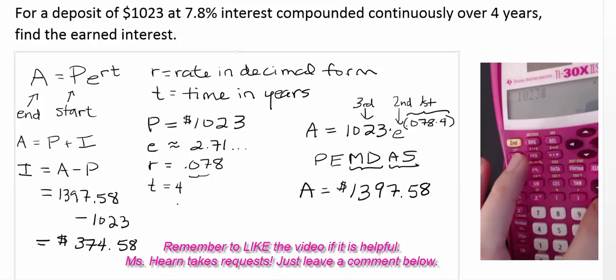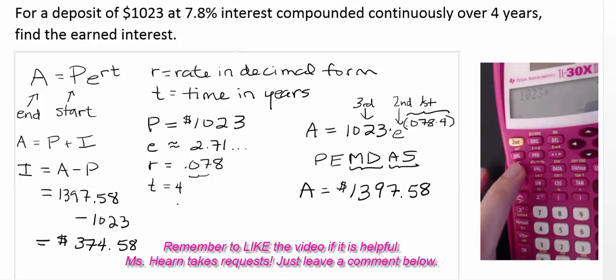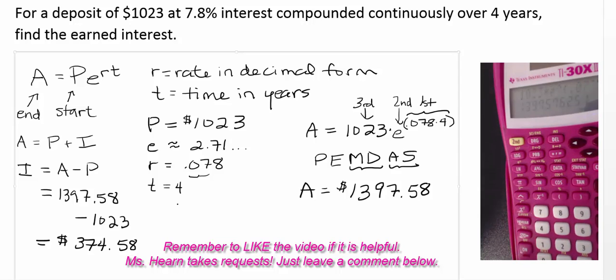1,023 times second natural log button, which has the E to the power of X above it. And you see the E to the, and it already puts parentheses for us. And we're going to put 0.078 times 4, close the parentheses, equals. And here we see our $1,397.58 again.